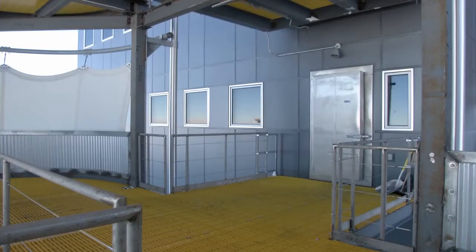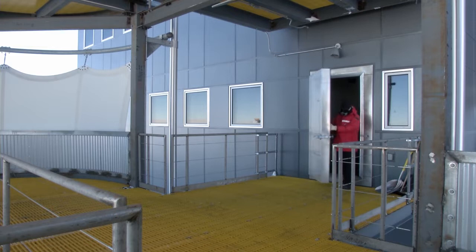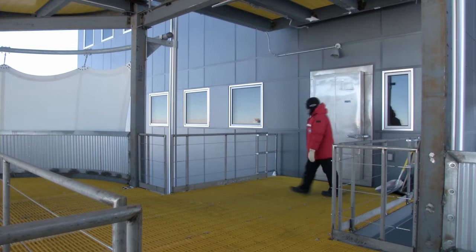In the Scott Amundsen Station at the South Pole, Jakob von Santen is now feeling at home. He can reach the IceCube on foot.